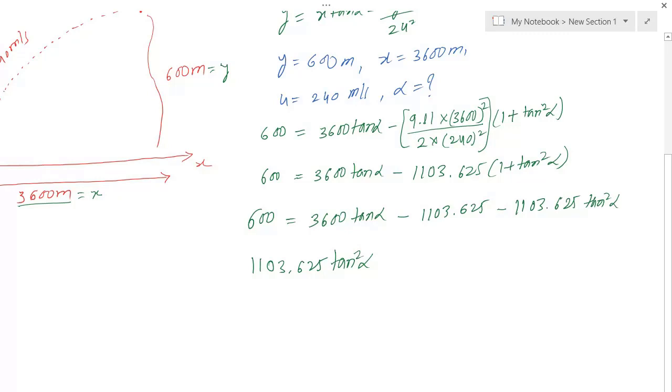I am bringing all these values to the left-hand side. Minus becomes plus, so it becomes minus 3600 tan alpha, plus 600, and when I shift this to the left-hand side it becomes plus 1103.625 equals 0.